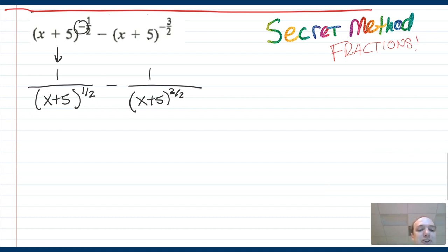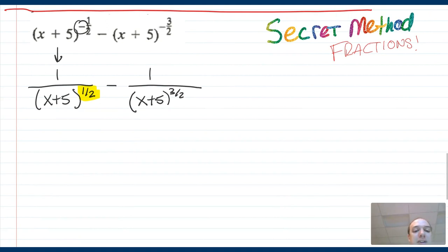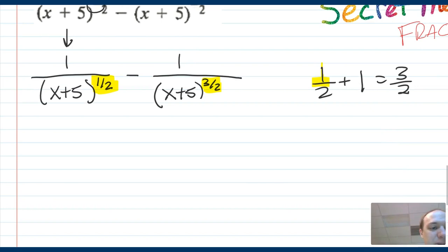So rewrite this as one over x plus five to the half power minus one over x plus five to the three halves power. We've converted it into an expression with no negative exponents. But now we have two completely different fractions. Remember that you can't add fractions with unlike denominators. So what we need to do is get a denominator to match. This is the smaller number, one half. So I'm going to try to bring that one half exponent up to match the three halves exponent on the other side. I know that one half plus one gives me three halves. So I can multiply by x plus five over x plus five.